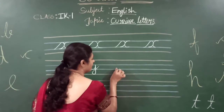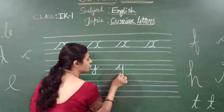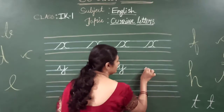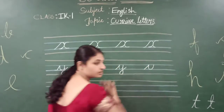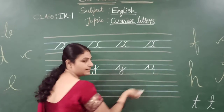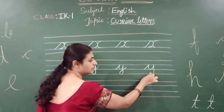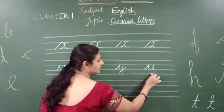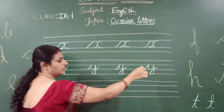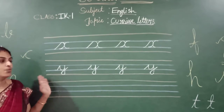Cursive letter Y: slant U, straight line. Again make another slant. Slant line U, straight line, outstanding line. Straight line, make a small curve here. This is Y. But we have to make another slanting line. This is the letter Y.